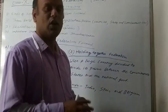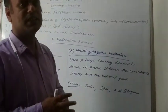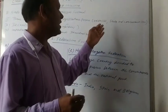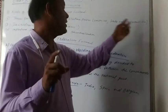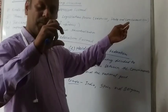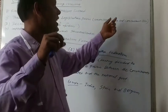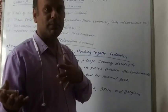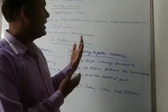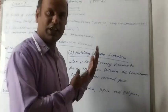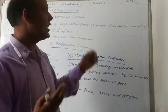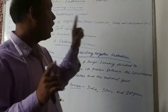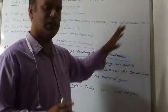The third one is the Concurrent List. The Concurrent List contains those subjects on which both the union and the states can make laws. For example, marriage, adoption, and education. These are subjects in the Concurrent List on which both governments can make laws.